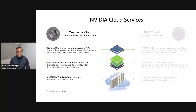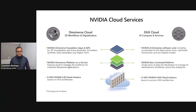NVIDIA's cloud services will be available on Azure Cloud in the second half of this year. Omniverse Cloud is built on foundational apps for 3D visualization and scene assembly, simulation, synthetic data generation, and digital twins. It is purpose-built to manage 3D workflows for industrial metaverse applications, and is powered by L40 GPUs designed for graphics-intensive workloads. DGX Cloud, on the other hand, is focused on accelerated AI and data science tools, optimized frameworks, containers, and pre-trained models that you can choose and customize as part of NVIDIA AI Enterprise software. Base Command, which comes as part of DGX Cloud, is a single pane experience for developers to manage AI deployment workflows across the enterprise, and is powered by NVIDIA H100 GPUs.